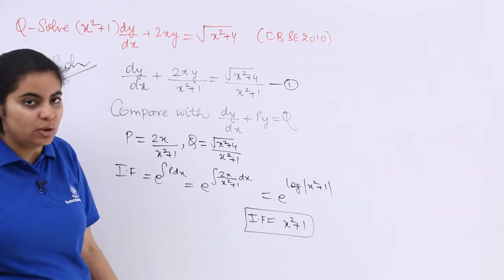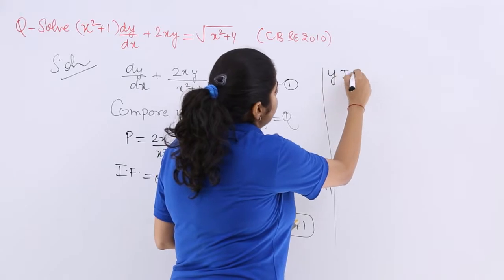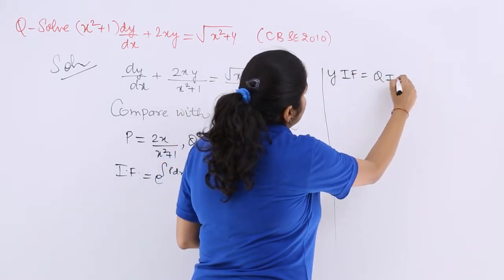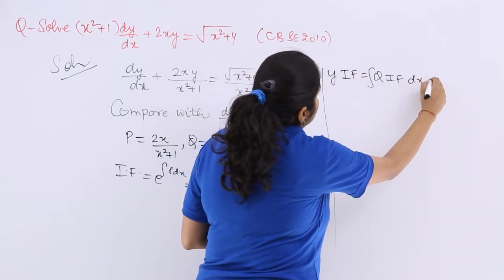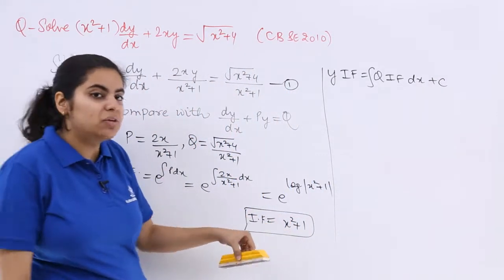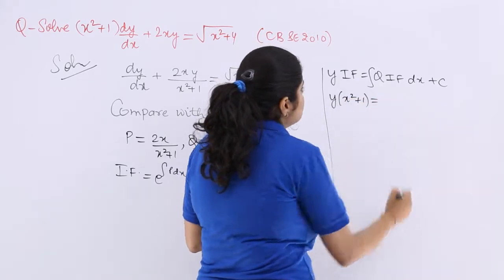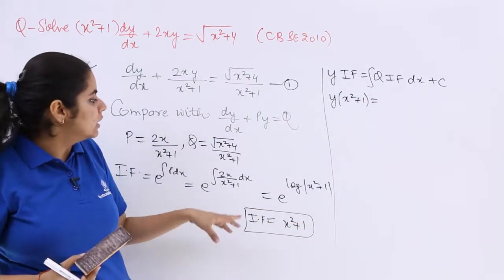which is y × integrating factor = ∫(q × integrating factor) dx + c. What is y × integrating factor like? y multiply x²+1 = q × integrating factor.